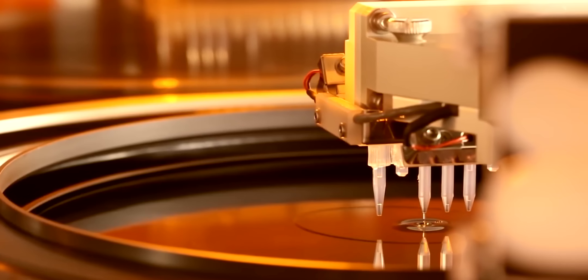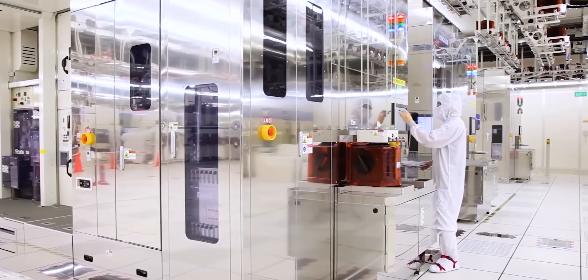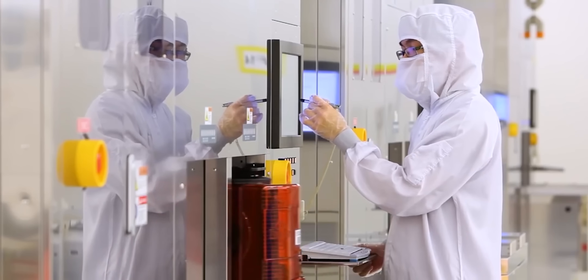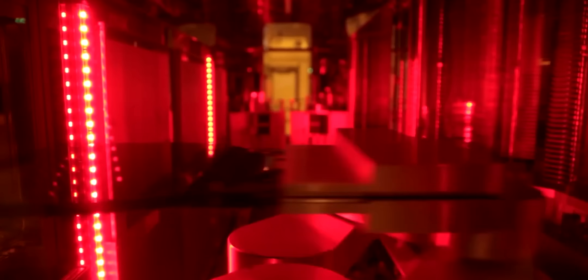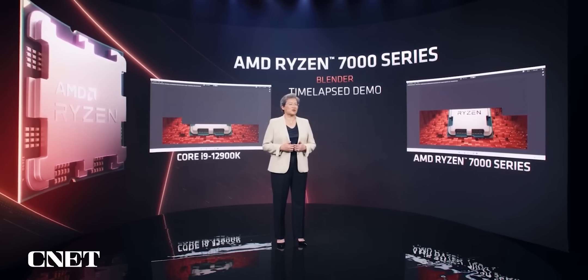Today, TSMC is responsible for over 50% of all microchip manufacturing around the world, but they make over 90% of the advanced chips like the ones used in the latest iPhones, supercomputers, and even self-driving cars. This has huge downstream effects for the semiconductor industry.